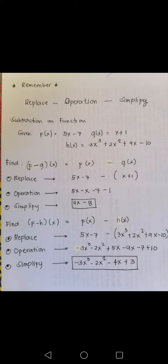For example number two, when you find the value of (f - h)(x), which is also equal to f(x) - h(x), let's replace by the value of f(x), which is 5x - 7, and put in parentheses the value of h(x), which becomes 3x³ + 2x² + 9x - 10.